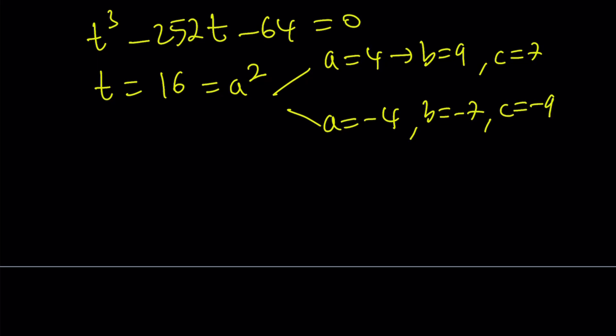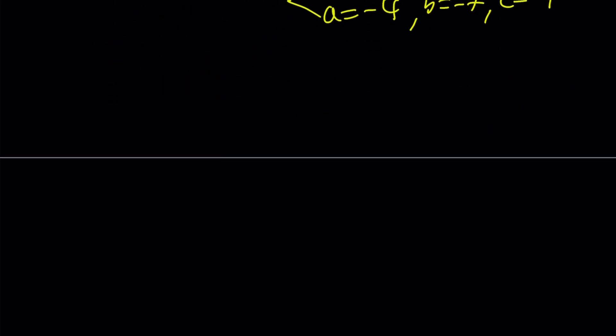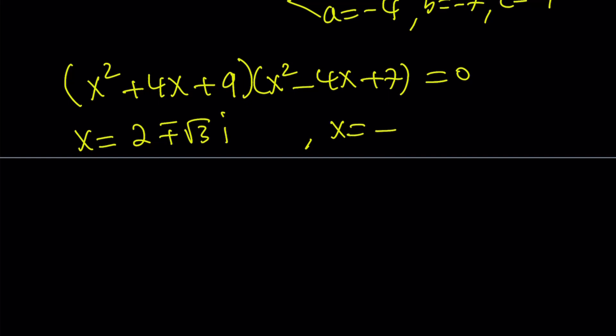Guess what? These two give us the same result. So we don't have to worry about it. We can just go ahead and write our equation as x squared plus 4x plus 9 multiply by x squared minus 4x plus 7 equals 0. And from here, you just solve the quadratics, and you get the following solutions. x equals 2 plus minus square root of 3i, and x equals negative 2 plus minus square root of 5i. And this brings us to the second method.